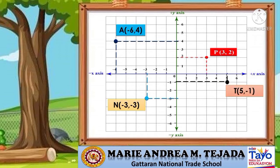Another example: we are going to plot point T with coordinates positive 5 and negative 1. Let's plot first the X coordinate, which is positive 5 on the X axis, followed by our Y coordinate, which is negative 1 on the Y axis. The intersection of 5 and negative 1 is now the location of point T. There are also points which lie on the axes. The points which lie on the Y axis have coordinates (0, Y), like point U, having the coordinates 0 and negative 6. So the location of point U is on the Y axis.